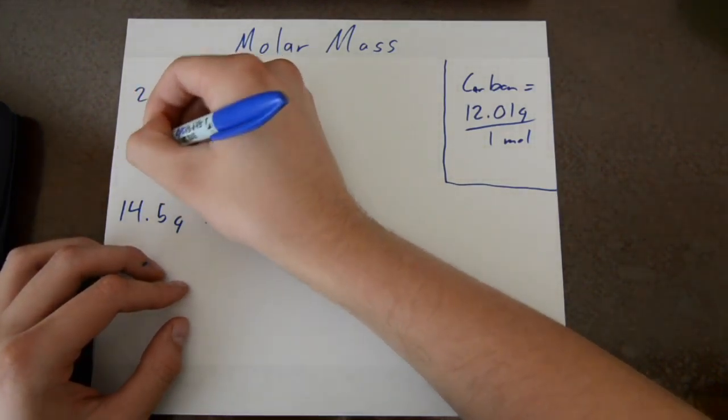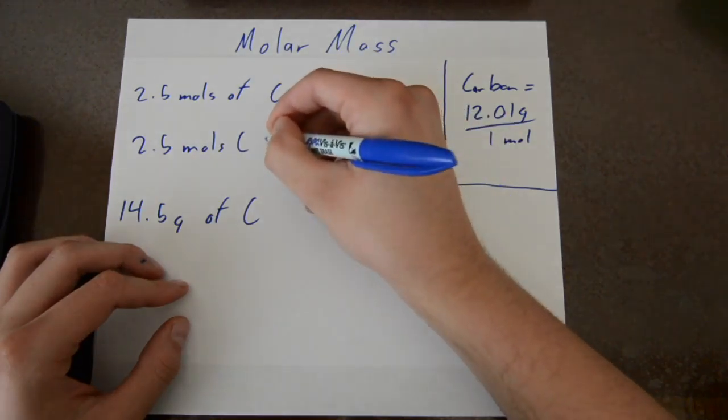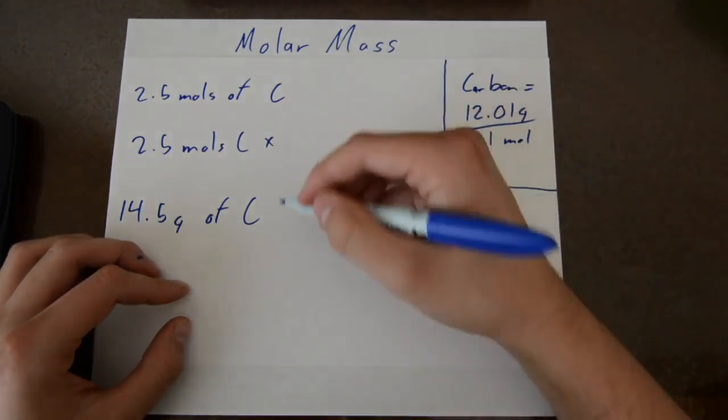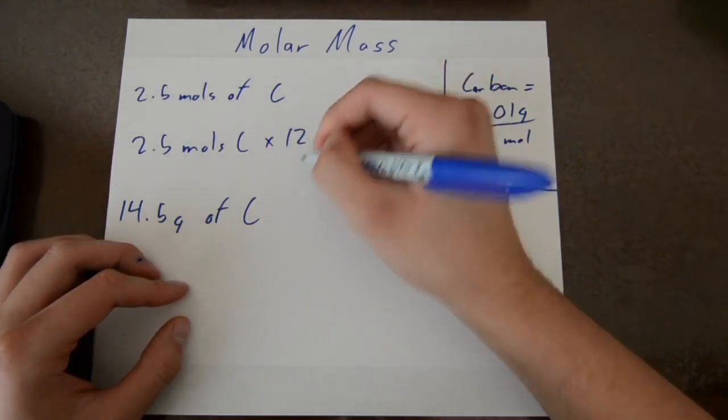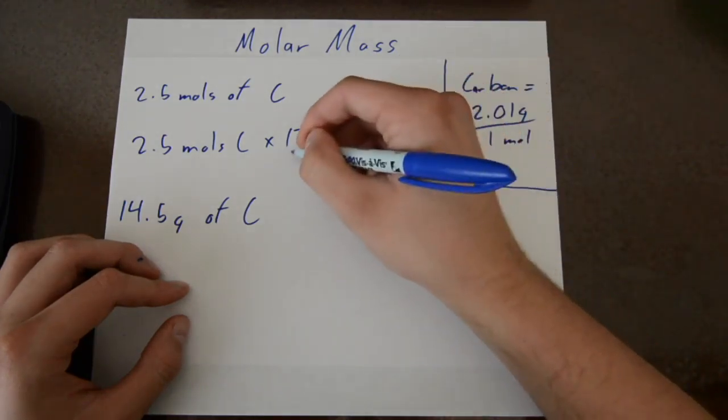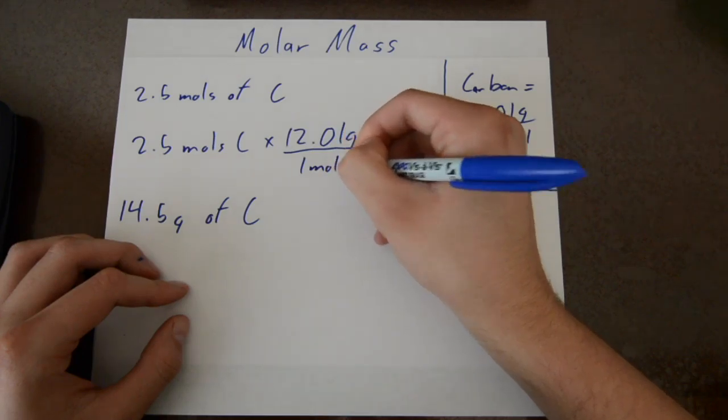So you can set up this with 2.5 moles of carbon multiplied by, and this is what I got off the periodic table, so you can just use that to find that number, 12.01 grams of carbon divided by 1 mole of carbon.